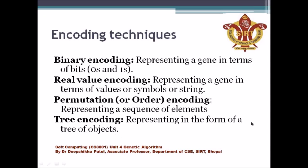To summarize: when using binary values use binary encoding; where real values are needed use real value encoding; where a sequence or order is important use permutation or order encoding; and for hierarchical or tree-specific problems use tree encoding. These encoding schemes allow us to encode a chromosome for any problem. The choice of encoding scheme depends on which problem you are applying the genetic algorithm to. Thank you.